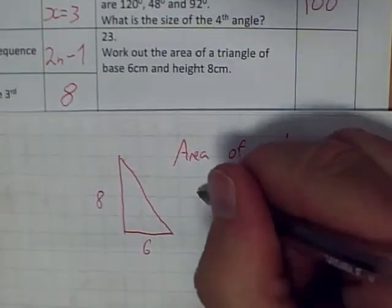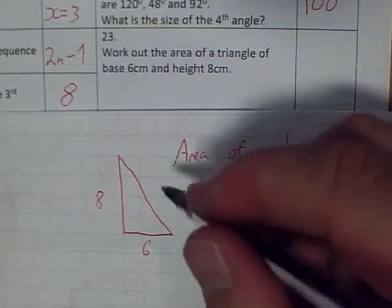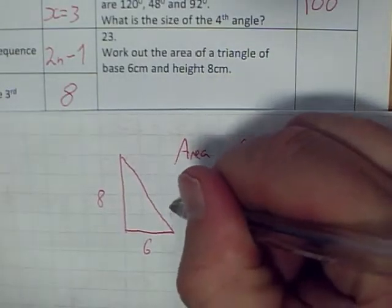So the area of a triangle. The area of a triangle is base times by height divided by 2.